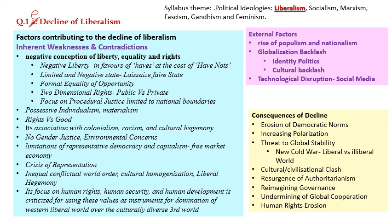Fourth question, 1D: 'Decline of liberalism.' It comes from the syllabus theme 'political ideologies — liberalism, socialism, Marxism, fascism, Gandhism, feminism.' Liberalism is directly picked from there. If you study liberalism, you must read the challenges it faces in contemporary times — because so many current domestic and global issues are connected to this challenge. Liberalism was established in the 17th century with Hobbes, then in the 18th century with Locke, Rousseau, Kant, and later John Rawls and T.H. Green.